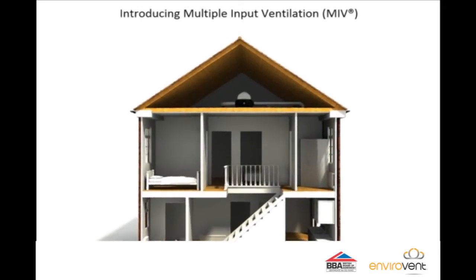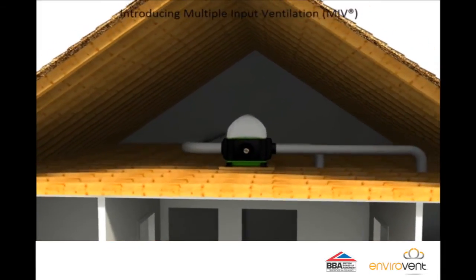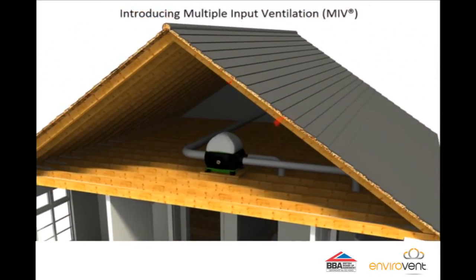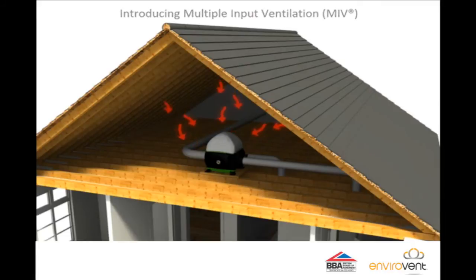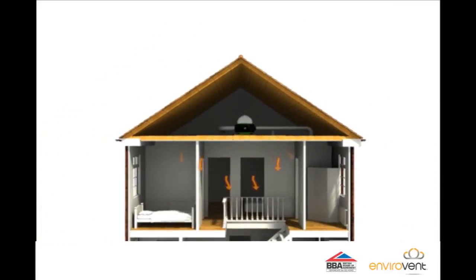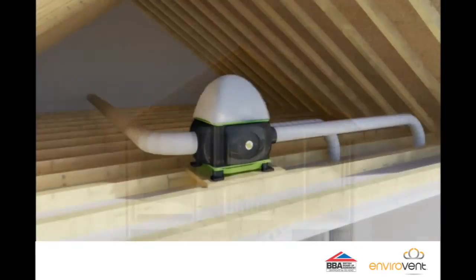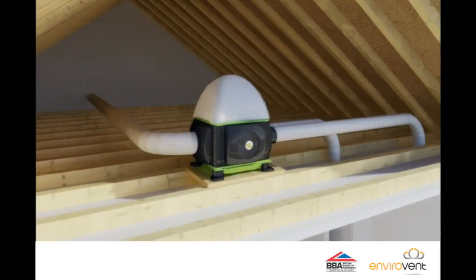Another strategy is known as multiple input ventilation. As you can see from this animation, the loft unit is picking up free energy from the loft space, filtering the air and delivering it into the property through multiple ceiling diffusers. The advantage of using multiple inputs is that you can target certain areas of the home where there may be a condensation or mould problem, or perhaps there may be a person suffering from hay fever or asthma.